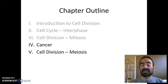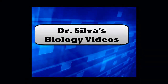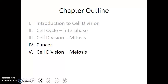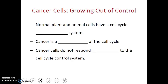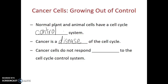In this next video, we'll talk about a serious disease of the cell cycle, known as cancer. The cell cycle and the rate of cell division is something that's controlled by the cell cycle control system. Normal plant and animal cells have a cell cycle control system. Cancer is when normal plant or animal cells no longer listen to that cell cycle control system. Cancer is a disease of the cell cycle — cancer cells do not respond normally to that cell cycle control system.